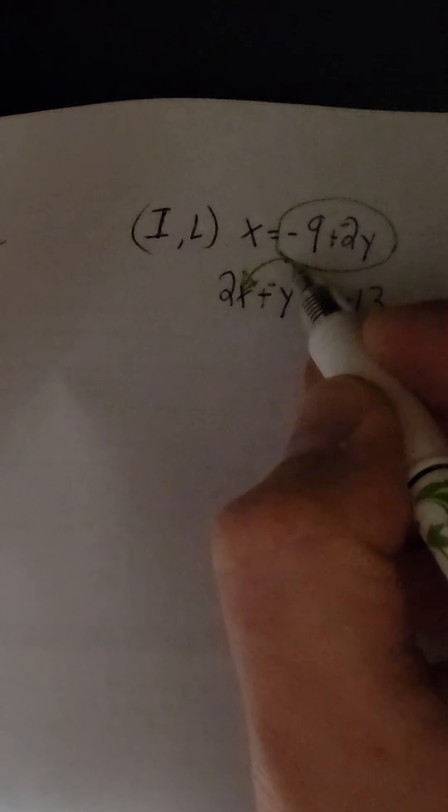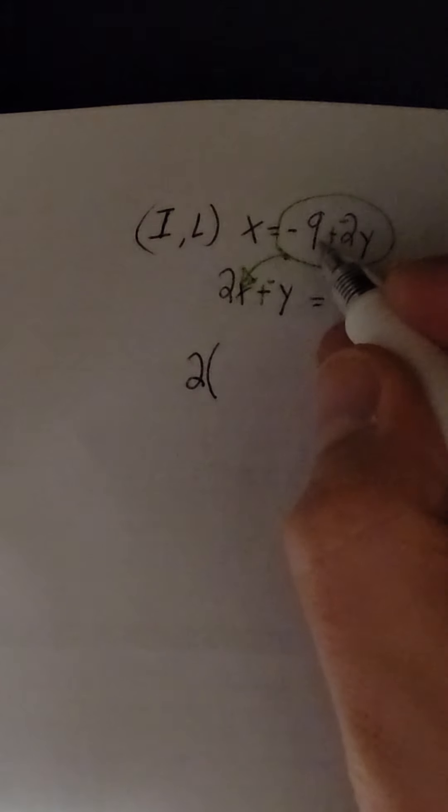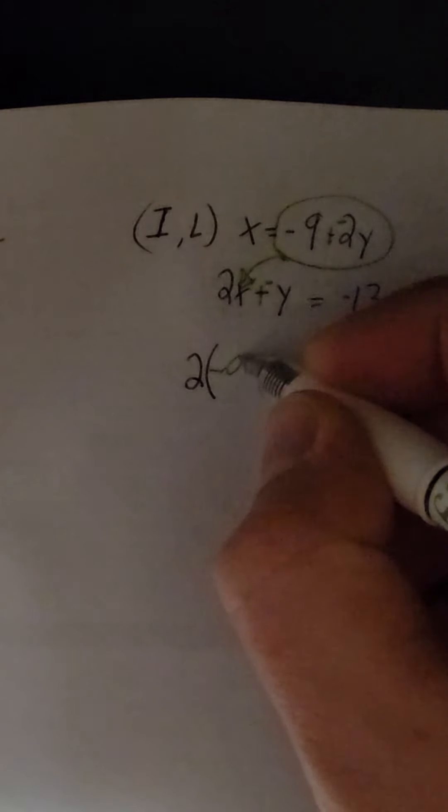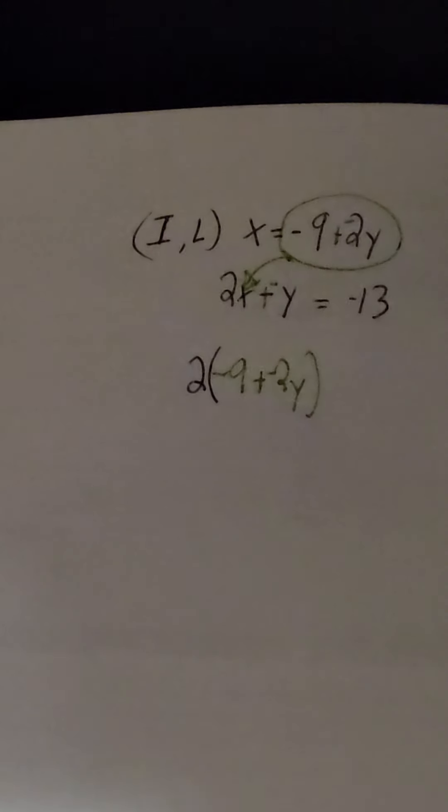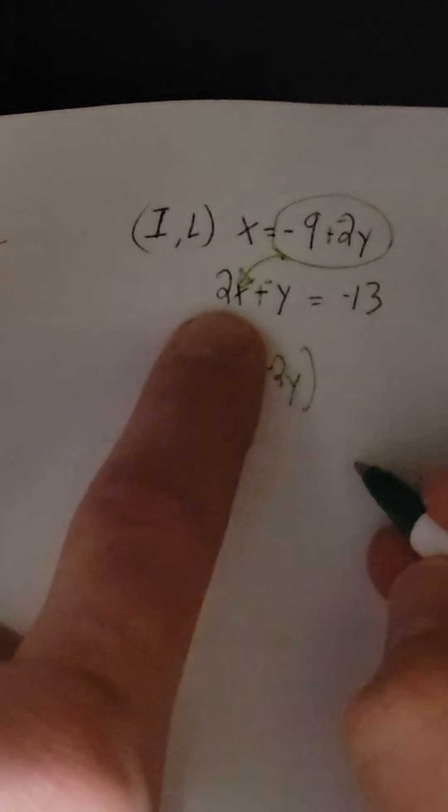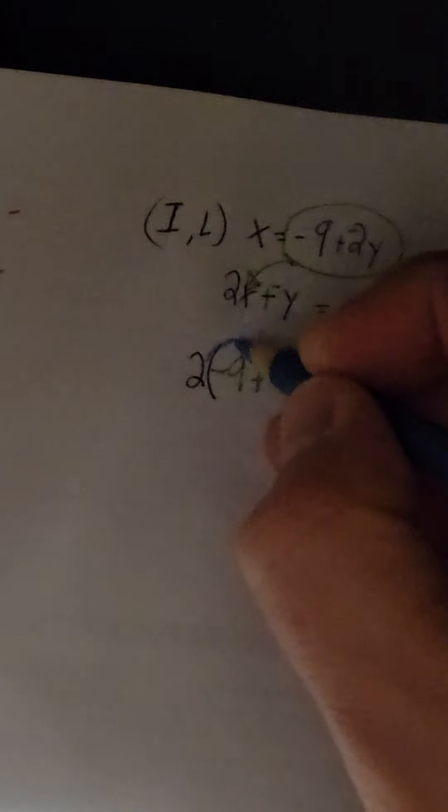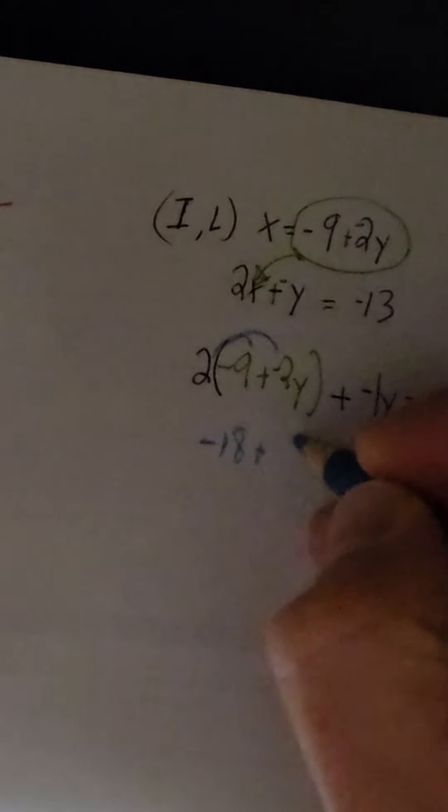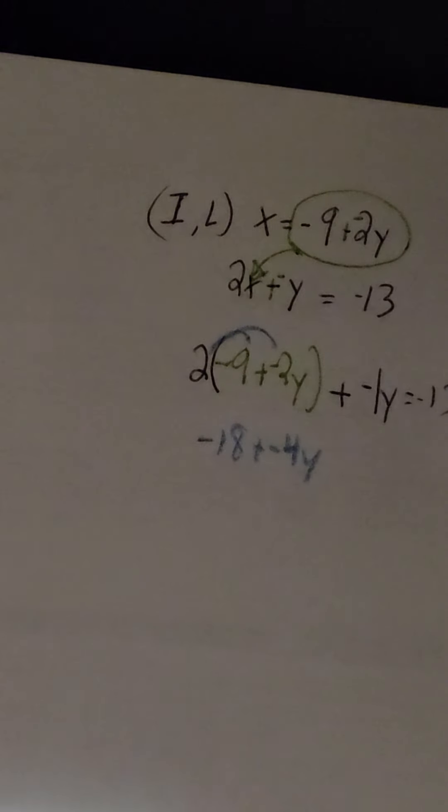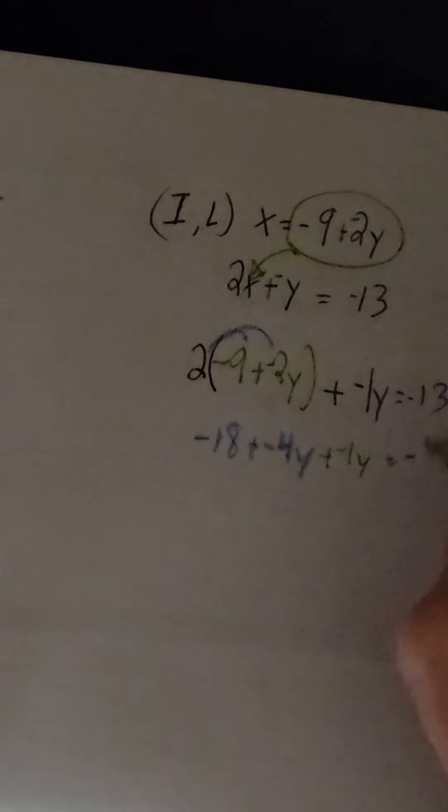And in the second equation, plug that in for our x. Since this first equation had x, we plug it in here. So now we're going to take our 2 times everything that our x equals, so that's this up here. We need to plug in negative 9 plus a negative 2y. And don't forget to continue through. That's what 2x is. Then you've got plus a negative y, which is a negative 1 I'm going to put in right away, equals a negative 13. So before we go too far, distribute this. So again, that's a negative 18 plus a negative 4y. Then you've got plus a negative y, equals a negative 13.